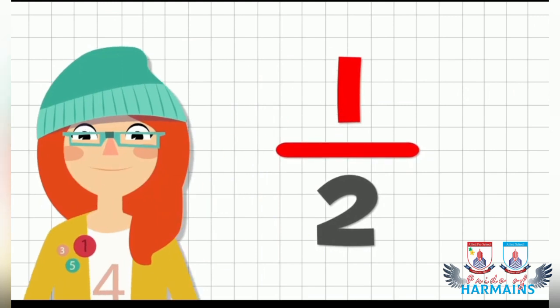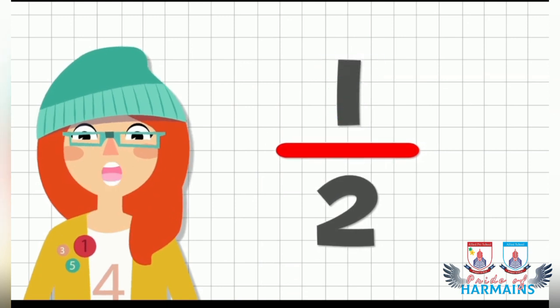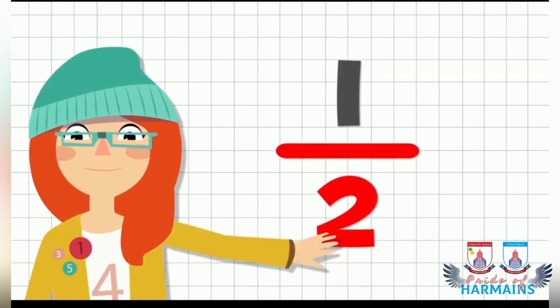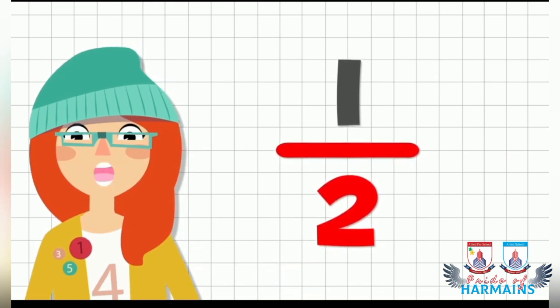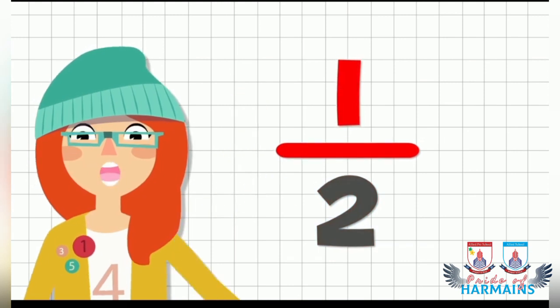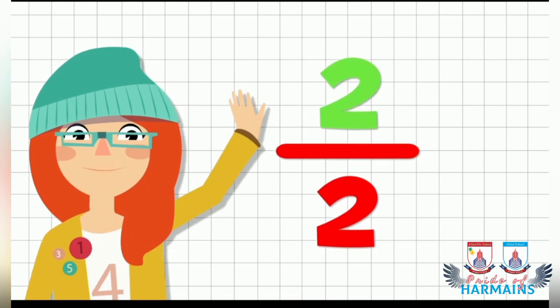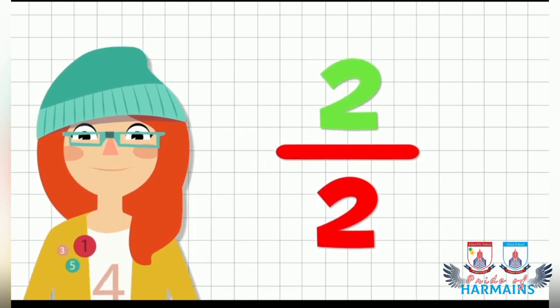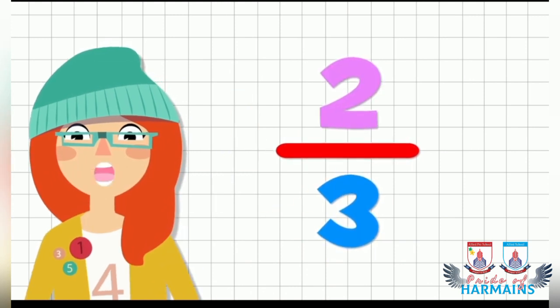Jo fraction ka numerator hota hai, usko hum 1, 2, 3, 4, 5, 6 and 7 karke padhte hain. But jo iska lower portion hota hai, which is denominator, isme 2 ko hum bolte hain half. To humare ye fraction kya banega? One of half fraction. Isi tarah two of half fraction. Phir one by third fraction. Three ko kya padhenge? Third. Two by third fraction. Two by fourth fraction. Three by fourth fraction.